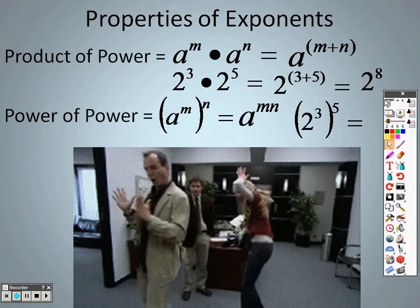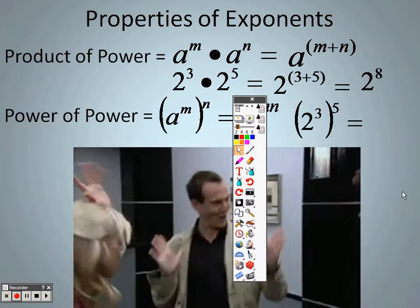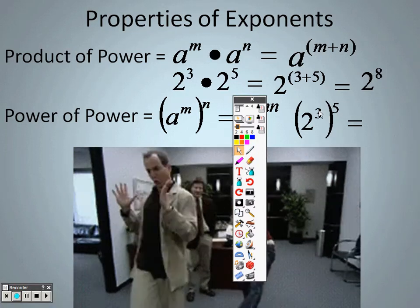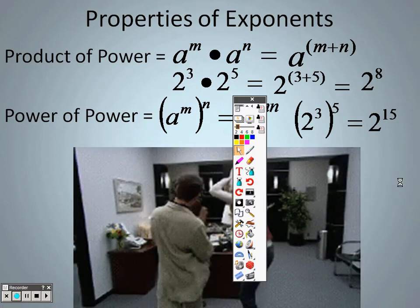So what that means is if I have 2 to the 3rd to the 5th, that's really taking 3 times 5, which is multiplying, so it's 2 to the 15th power as your answer.